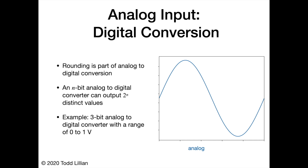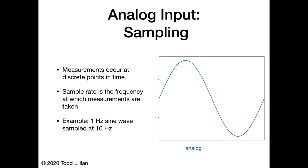An n-bit analog to digital converter can output 2 to the n distinct values. The data acquisition device just introduced is 16-bit, so it produces 2 to the 16 different values. Let's take a look at an example with a 1 hertz sine wave using a 3-bit analog to digital converter. 2 to the 3 is 8, so there are 8 different values that can come out of this conversion. Looking at a range of 0 to 1 volt — 0 sevenths to 7 sevenths of a volt — if we convert this sine wave into digital using this 3-bit converter, we would get the following signal.